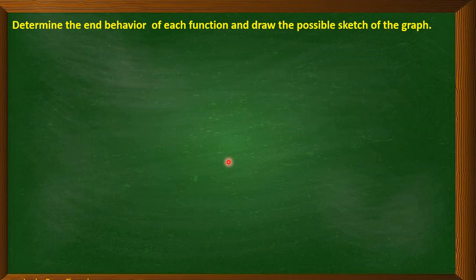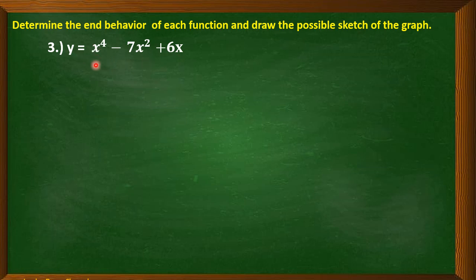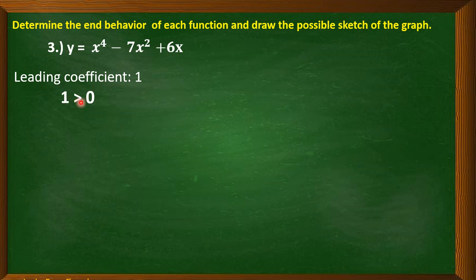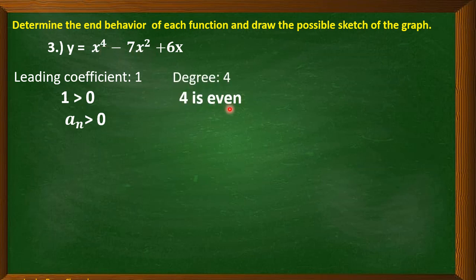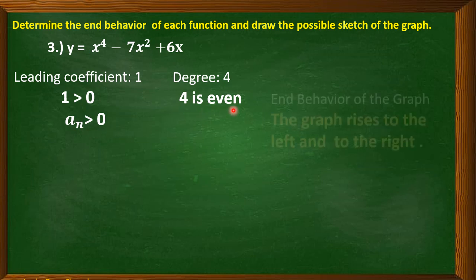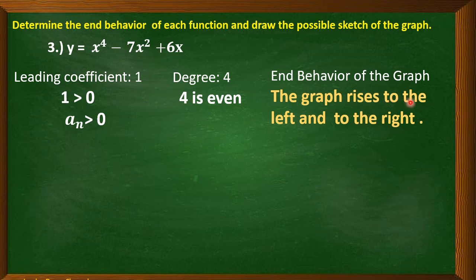Example 3: y = x⁴ - 7x² + 6x. The function is already in standard form. The leading coefficient is 1, which is greater than 0. The degree is 4, which is an even number. This is the third case of the leading coefficient test. Therefore, the end behavior is: the graph rises to the left and to the right.